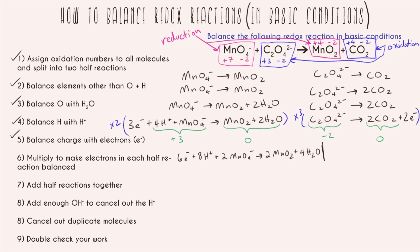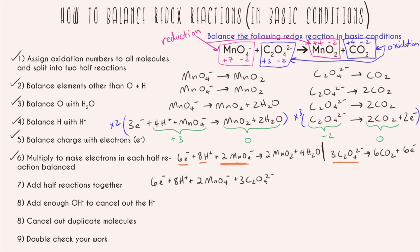Going ahead and rewriting both half reactions with the new coefficients — each molecule's coefficient is multiplied by either two or three depending on the half reaction. Now step seven: add the half reactions together by combining both left-hand sides and both right-hand sides. The combined left-hand side has three components, and the combined right-hand side has four components.